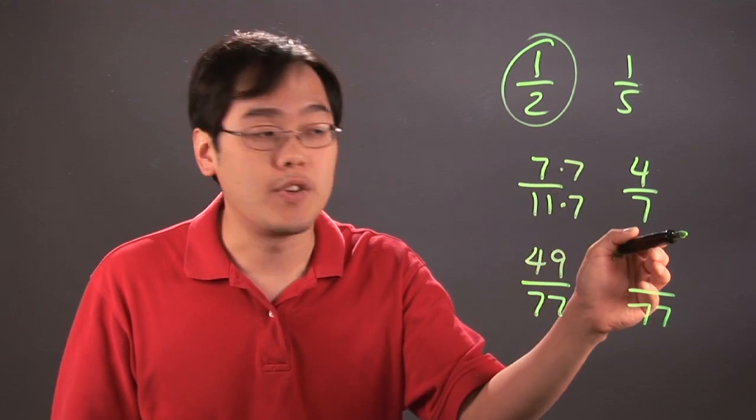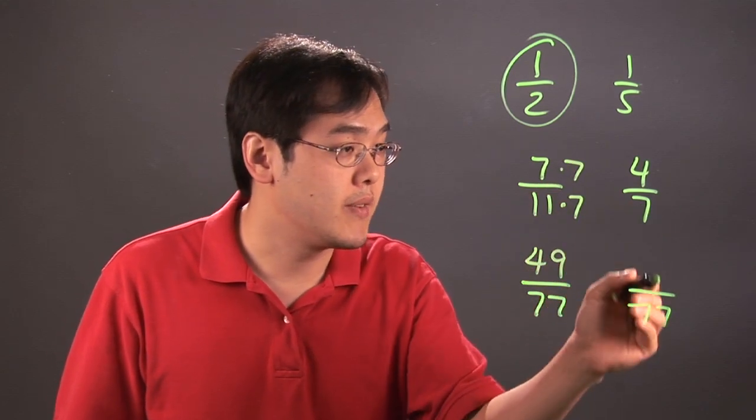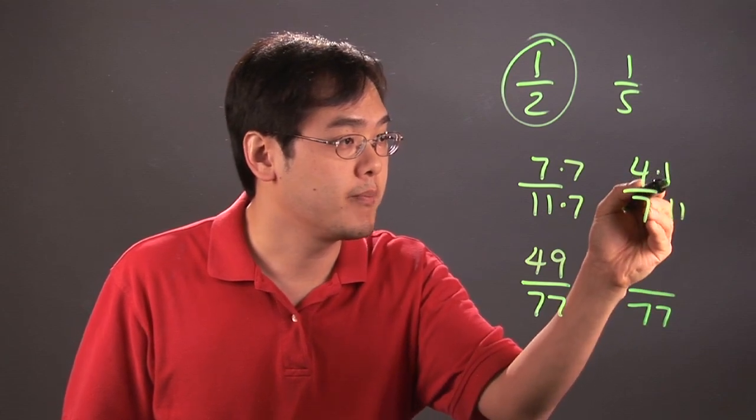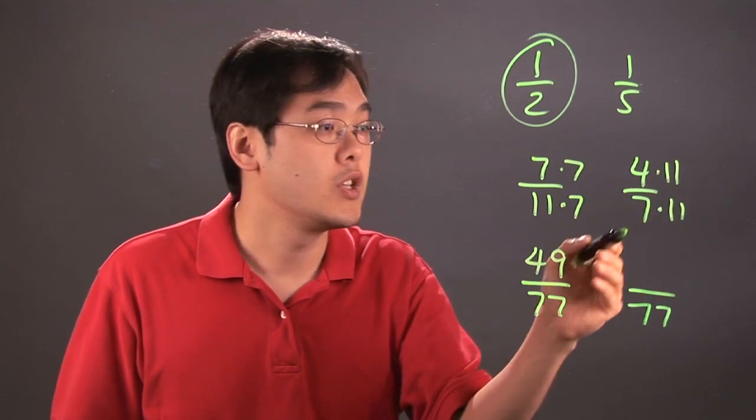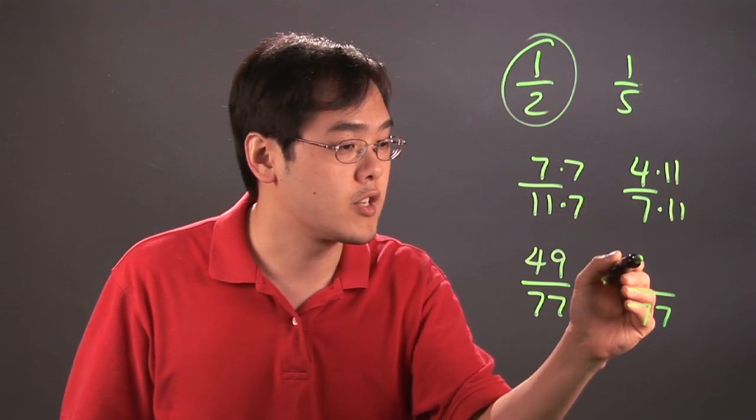Now, same kind of idea over here. 7 times what is 77? That's going to be 11. So you're going to multiply the top and bottom by 11. So 4 times 11 here is going to be 44.